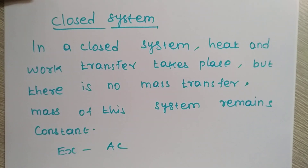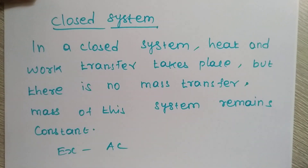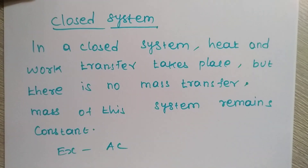In a closed system, heat and work transfer occur, but the mass remains constant. An example of this is an AC unit, which has an indoor unit and an outdoor unit. The refrigerant circulates between the two.